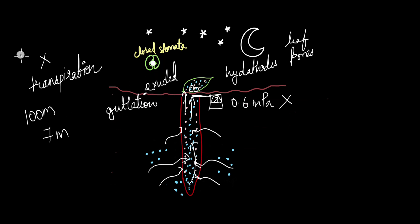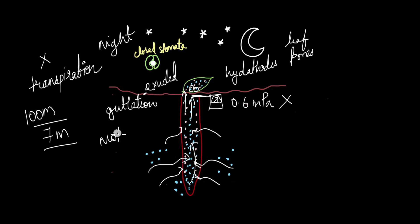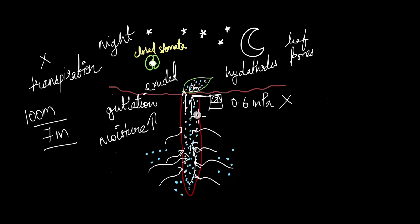Root pressure alone is not enough for tall plants, but it is sufficient for smaller plants to transport water and nutrients, especially at night when the stomata are closed and when there is enough moisture in the soil. The soil needs to be filled with water — if it is dry, there is not enough water to enter the root. At night when soil moisture is high, water enters the root through osmosis, generating pressure that pushes water, nutrients and solutes to the upper parts of the plant where they are exuded out.